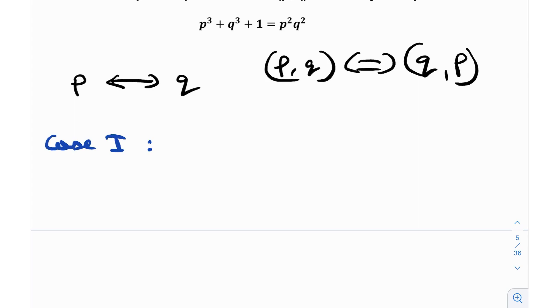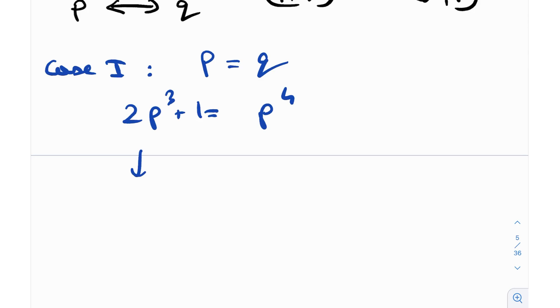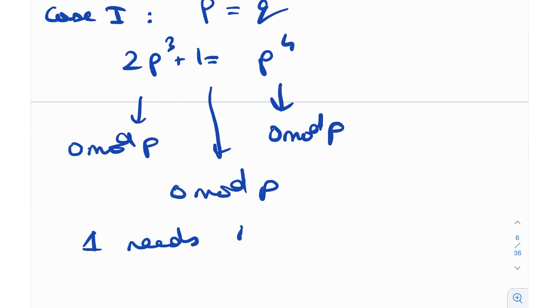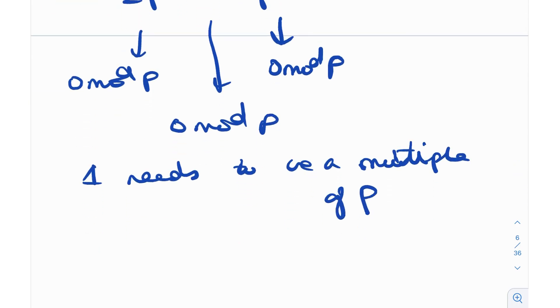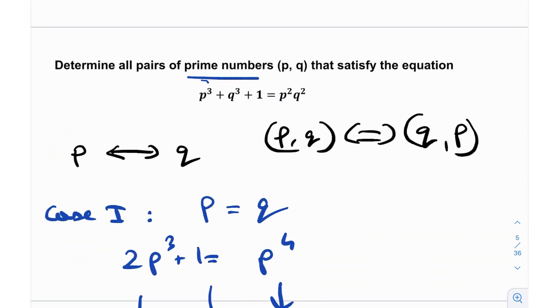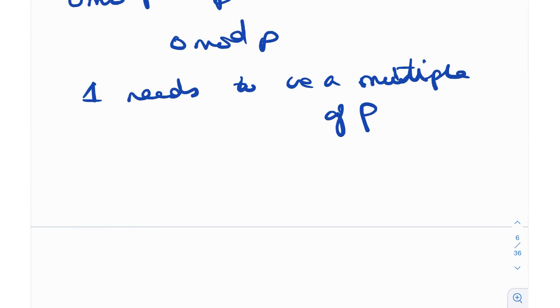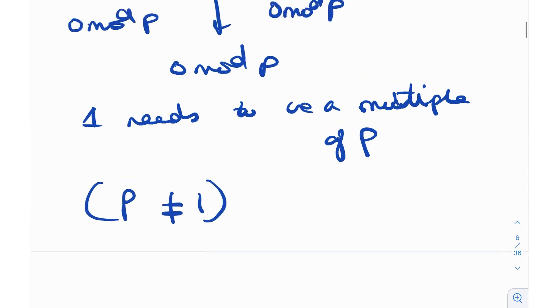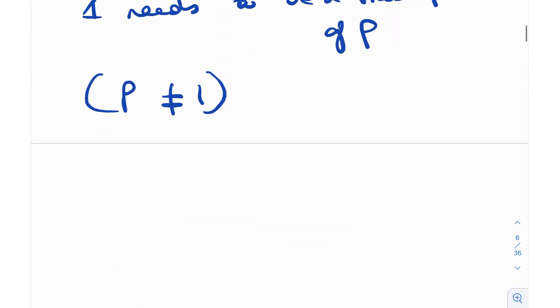I'll split it up into two cases. Case one is p equals q. If equality holds, then 2p^q + 1 = p^4. This is very easy to see that this never holds because this is zero mod p. Similarly this is also zero mod p, so one needs to be a multiple of p. But since p is prime this obviously does not hold true. So p equals q does not have any solutions whatsoever.